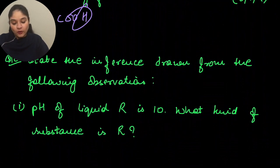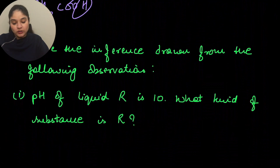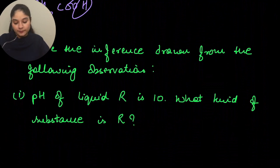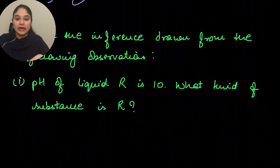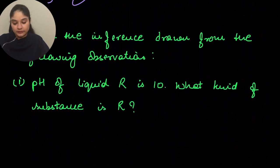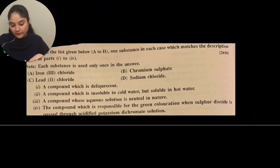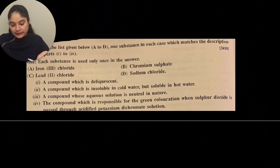The inference drawn from the observation that the pH of liquid R is 10: R is an alkaline substance.